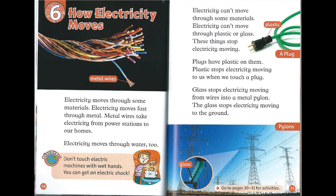Electricity can't move through some materials. Electricity can't move through plastic or glass — these things stop electricity moving. Plugs have plastic on them, and plastic stops electricity moving to us when we touch a plug. Glass stops electricity moving from wires into a metal pylon.